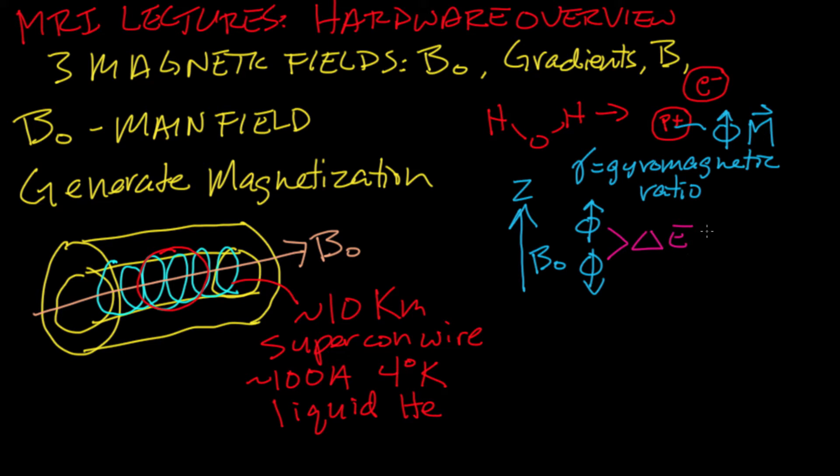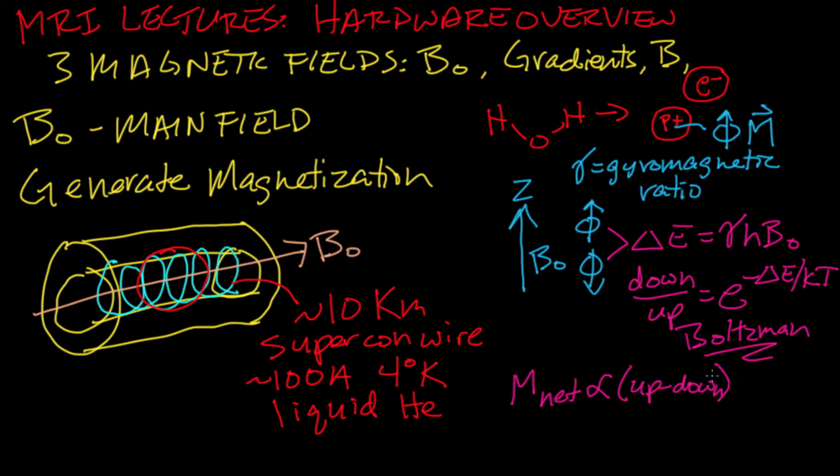In this case, the difference in energy between the two states is given by the gyromagnetic ratio of gamma times H times Planck's constant times the main field. The split in energy level causes a difference in population between the number of spins that are in the down state versus the number that are in the up state, and the ratio of those two are given by E to the minus delta E over KT, which is the Boltzmann distribution. The net magnetization is the magnetization of a single proton times the difference in the number between those that are in the up state and those that are in the down state.